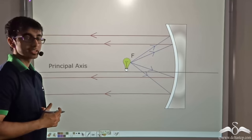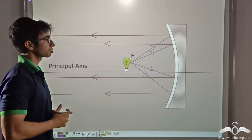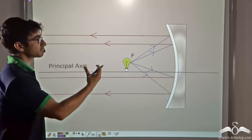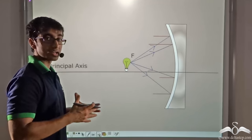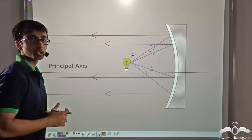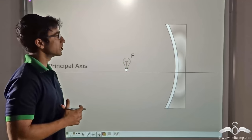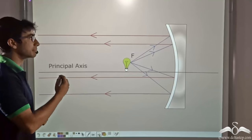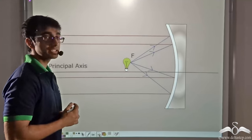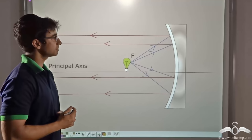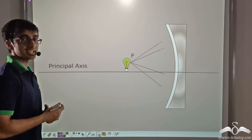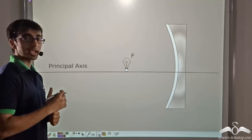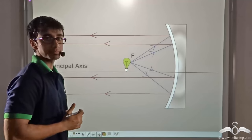Here we notice that the bulb is kept at the focus of the concave mirror. Now notice that the rays of light coming out from the bulb, after reflection from the concave mirror, are becoming parallel to the principal axis and also parallel to one another. So in this way we are getting a beam of light in which the light rays are parallel. Due to this, the image of the bulb is being formed at infinity, which means these light rays are traveling a long distance. Thus the purpose of the bulb — to ensure the driver can see a long distance ahead of him — is fulfilled.